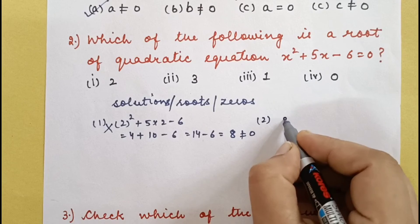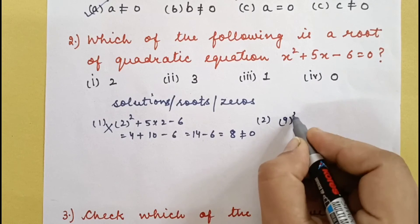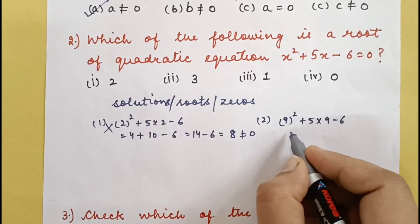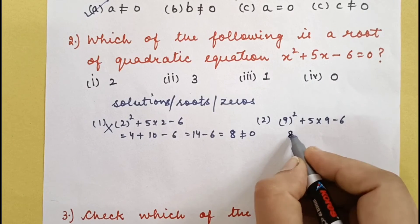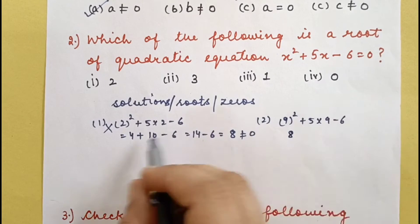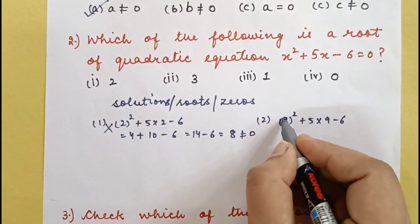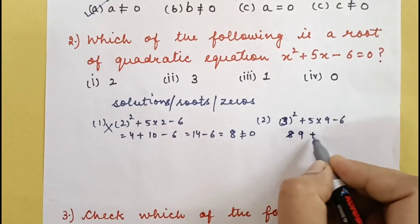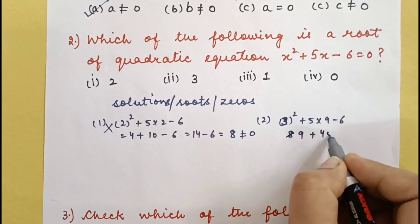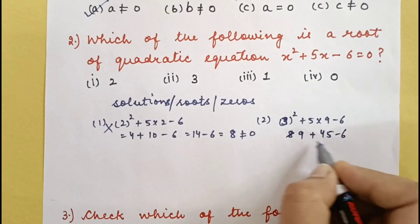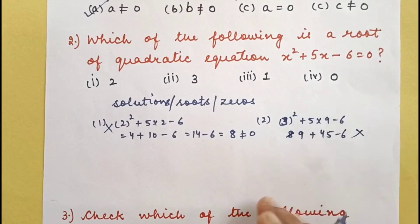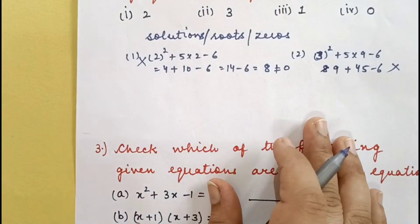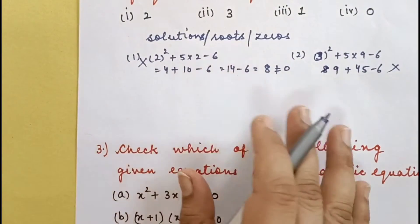Now check x = 9: 9² + 5×9 − 6 = 81 + 45 − 6. Calculating this — it does not satisfy the equation either, so 9 is not the root.